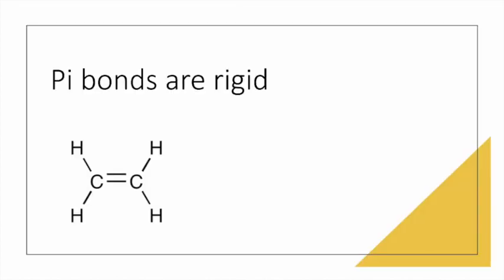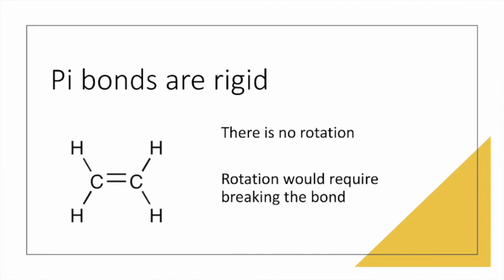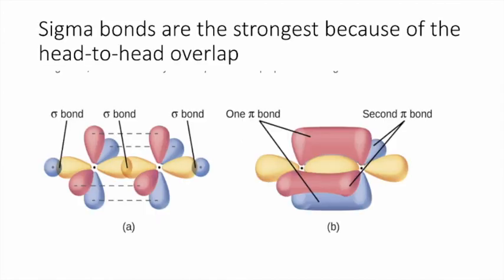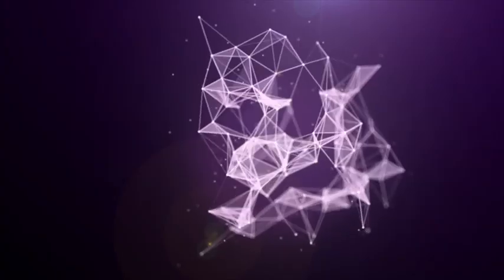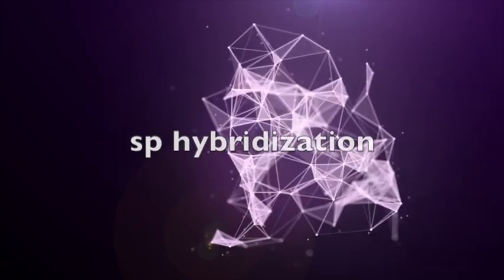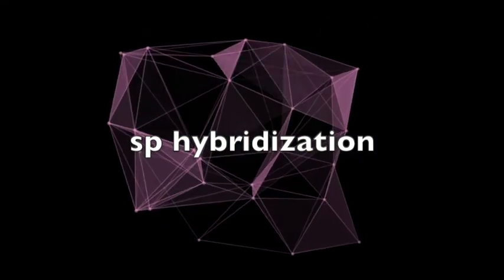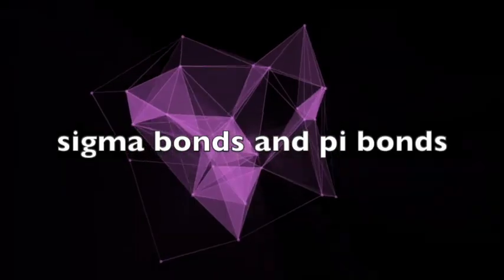You should know that pi bonds are rigid. There's no rotation around the axis because if we rotated it, we would have to break the bond. When we're looking at bond strength, sigma bonds are going to be the strongest because of the head-to-head overlap. However, remember that double bonds and triple bonds have a sigma bond as part of them. And there's extra strength that's being added by the pi bonds. So you should now be familiar with sp hybridization. And you should also be familiar with sigma bonds and pi bonds.